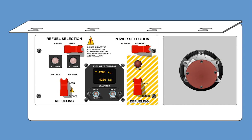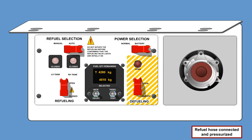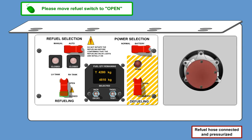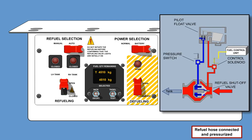For pressure refueling, please select a quantity higher than the actual fuel quantity. After pressurizing the refuel line, an automatic pre-check is performed and indicated by the two closed lights illuminated on the refuel panel. This verifies proper function of the shutoff system. Now you can move the refueling switch to open and refuel will start. The fuel control unit will energize the refuel control solenoid and lift the pilot float valve to stop refueling when the actual fuel quantity has reached the pre-selected value.